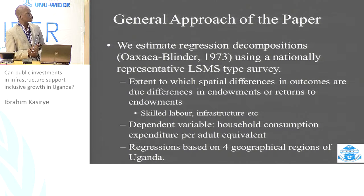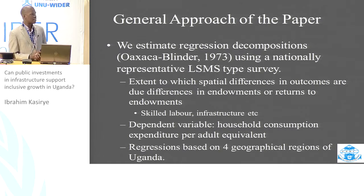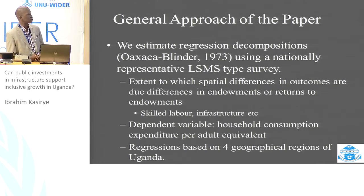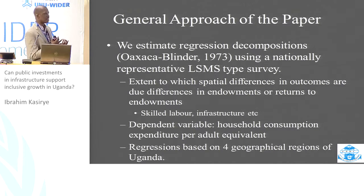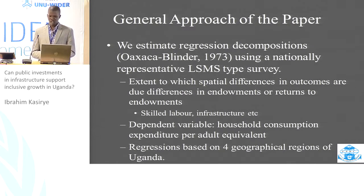In terms of methods, the general approach we follow is to estimate regression decompositions following the Oaxaca-Blinder style, using a nationally representative survey of the type of living standards measurement surveys conducted by the World Bank. We basically try to determine the extent to which spatial differences across the four geographical regions in Uganda — the spatial differences in outcomes — are due to differences in endowments or, secondly, returns to these endowments, for example skilled labor and infrastructure. Our dependent variable is household consumption per adult equivalent, a standard measure of welfare in such surveys.